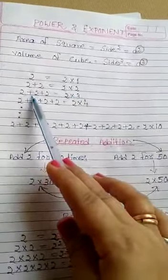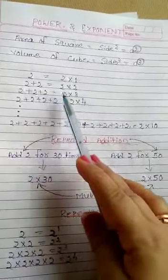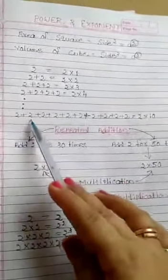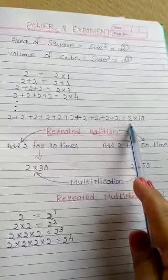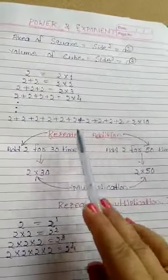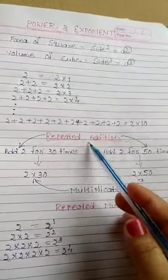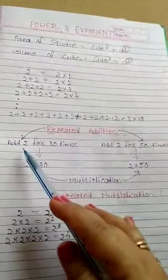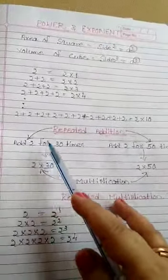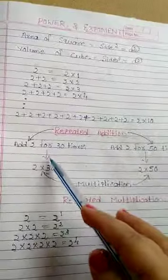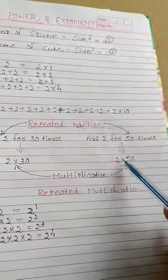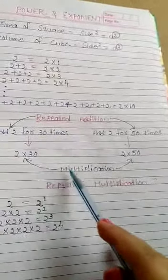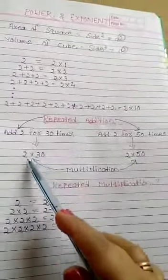Then 2 plus 2 plus 2 equals 6, so 2 multiplied by 3. And if 2 is added 10 times, then we write 2 multiplied by 10. These are all called repeated addition. The same number, however many times you repeat in addition, that many times we multiply with that number. For example, add 2 for 30 times — that means 2 multiplied by 30. Add 2 for 50 times — that means 2 multiplied by 50. So repeated addition is converting into multiplication.